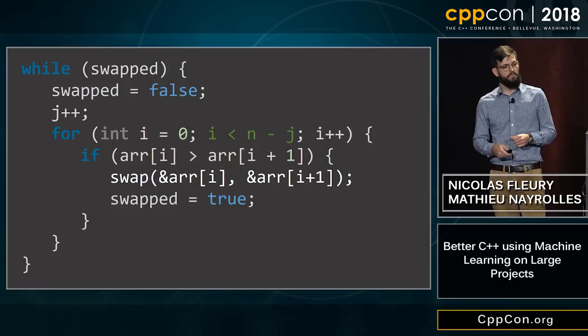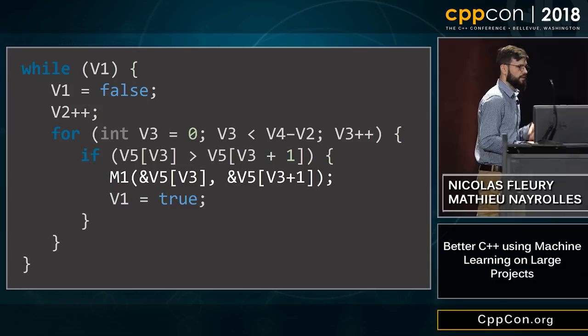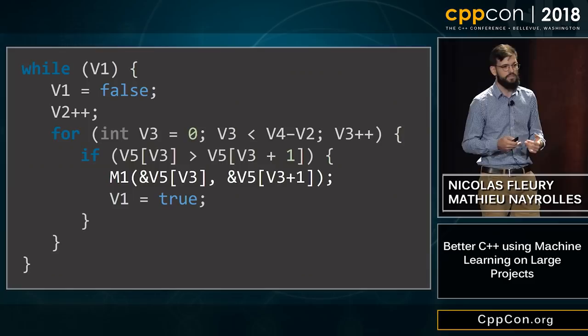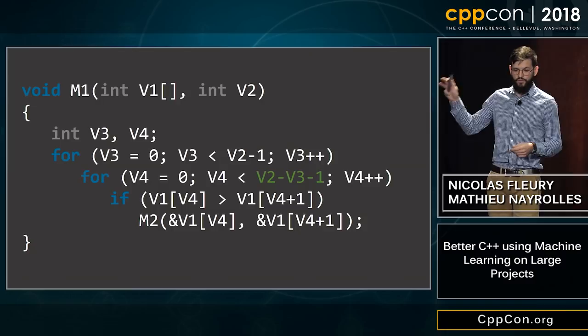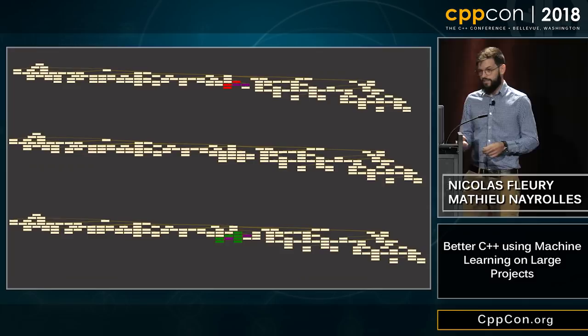What we do is abstract that piece of code by replacing all the variable names and function names with constant names of our own. When the code is abstracted, we can compare it to the buggy double-for bubble sort and find similarities between the buggy version and the fixed version. We can then take the fix applied to the while-based bubble sort and merge it with your buggy double-for bubble sort.